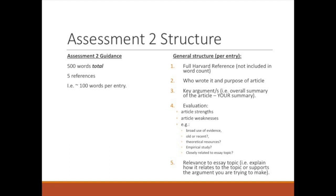Coming back to structure, because a lot of students seem concerned about this: start with the full Harvard reference — that doesn't go into your word count. You might want to briefly note who wrote the article and its purpose, but don't waste too much word count on that section. The real core of this exercise is identifying the key arguments. You need to give an overall summary of the key arguments of the article. You also need to indicate some kind of evaluation of the article, including strong points and weaknesses.